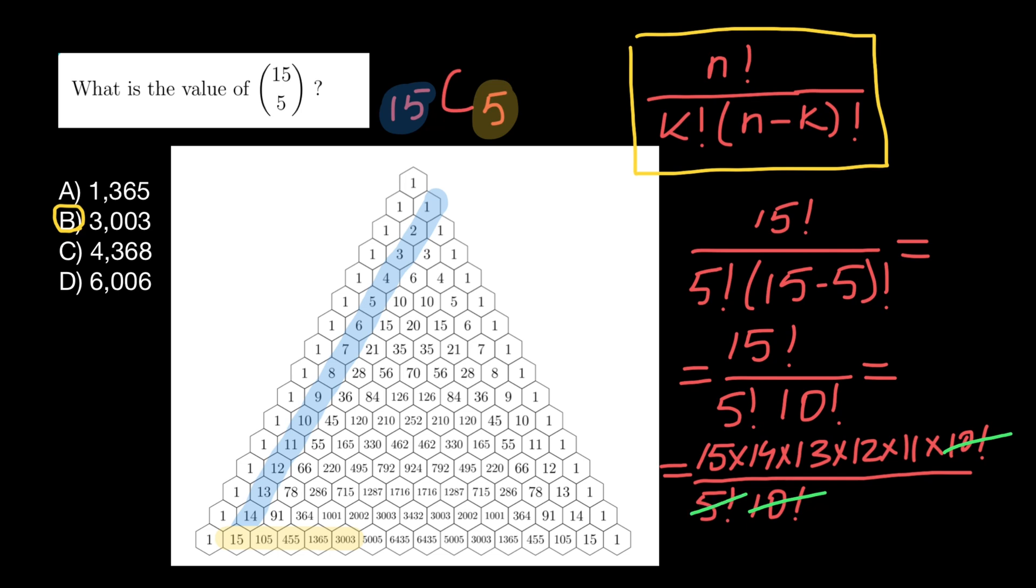And 5 factorial is going to be 5 times 4 times 3 times 2 and times 1. And our answer is going to be 3003, exactly the same number as we got using Pascal's triangle.